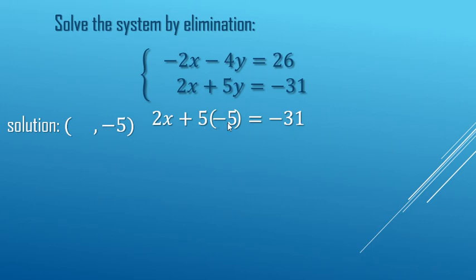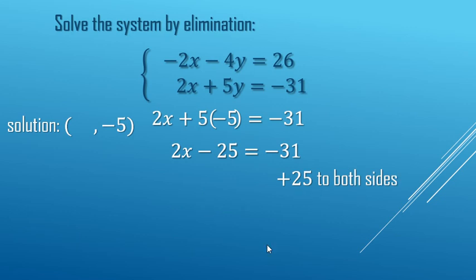So 5 times negative 5 is negative 25. So 2x plus a negative 25 is 2x minus 25 equals negative 31. You need to get x by itself, unsubtract the 25 to both sides, and then unmultiply the 2 to both sides. And we got x is negative 3.